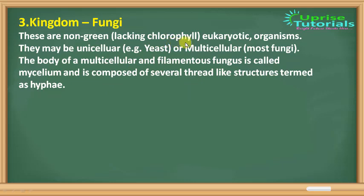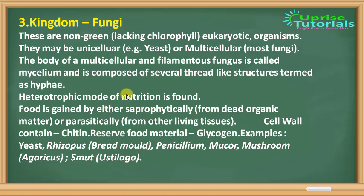Next is Kingdom Fungi. Fungi are non-green, lacking chloroplast, eukaryotic organisms. Because they do not have chlorophyll, it is clear they are not able to make their own food. They may be unicellular, like yeast, or multicellular. The body of a multicellular filamentous fungus is called mycelium, which is composed of several thread-like structures called hyphae. A heterotrophic mode of nutrition is found in fungi — since they are non-green, they cannot make their own food.